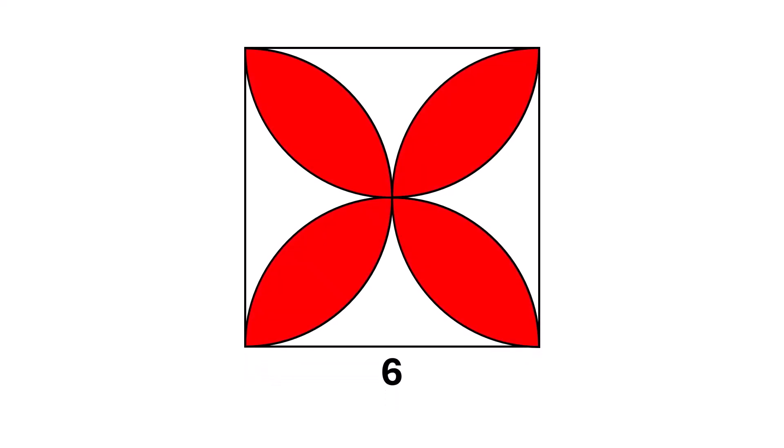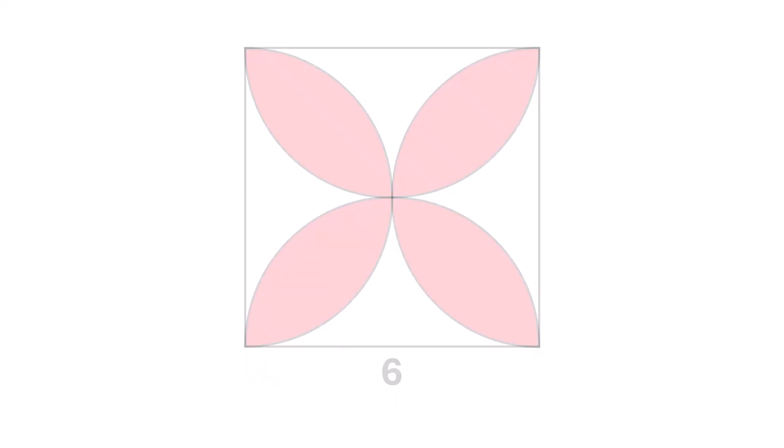Today, we'll explore an interesting geometry puzzle. We begin with a square. The side length of the square is six units.